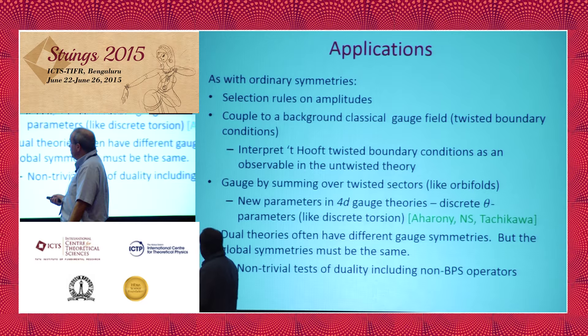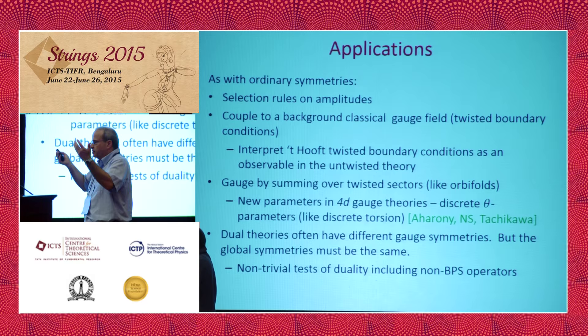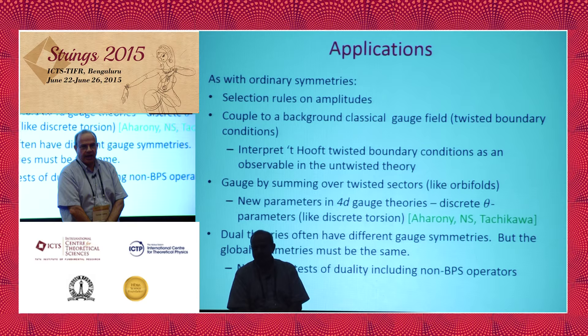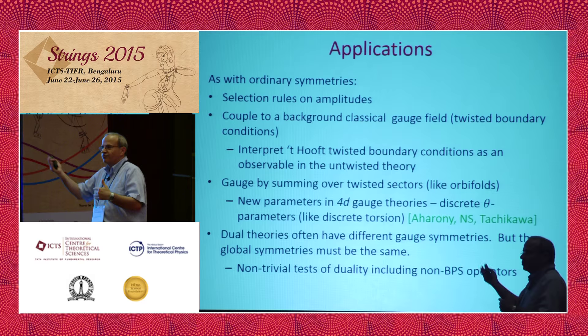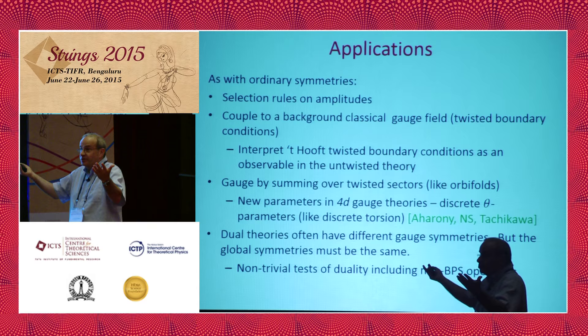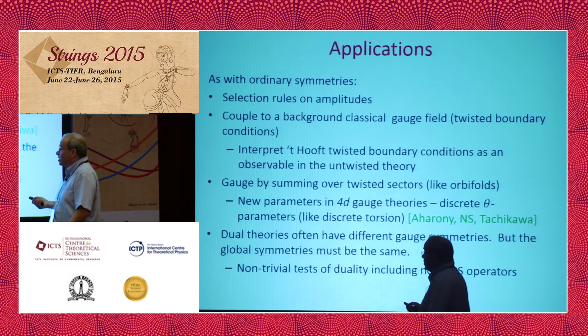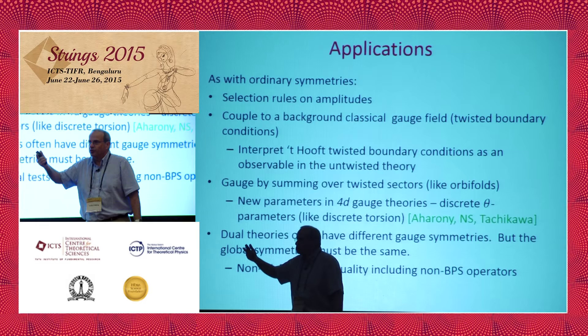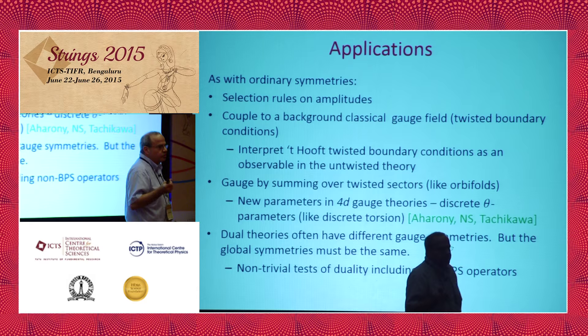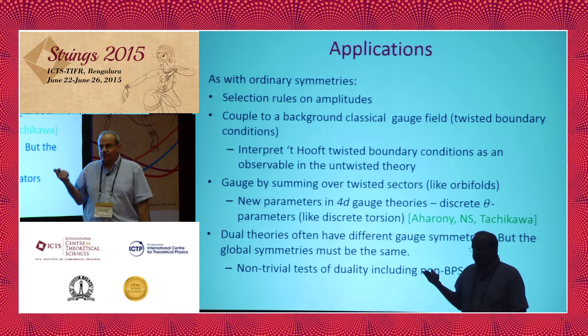When we consider dual field theories — dual in the sense of electromagnetic duality or others — they often do not have the same gauge symmetry. But the global symmetry must be the same on both sides, because from this perspective the global symmetry is a property of some operator in the spectrum that should be the same on both sides and should be topological. So that gives us two tests of duality — tests that were not done before, so theories that were thought to be dual had a chance to fail. And in all these supersymmetric theories, often these observables are not BPS, so this is a whole bunch of non-BPS observables one might want to check.